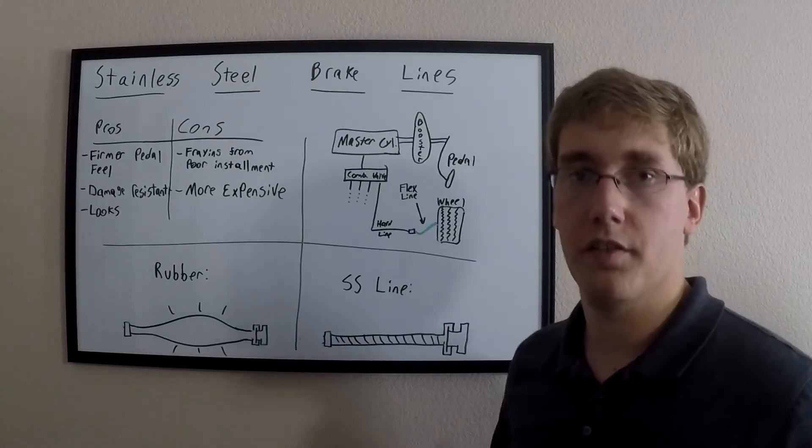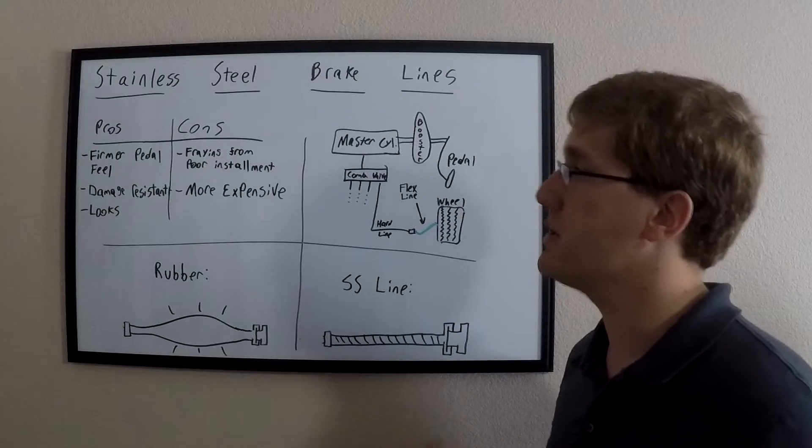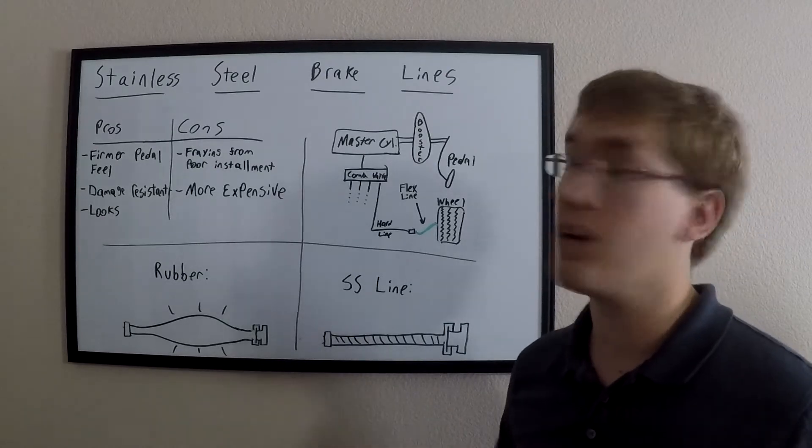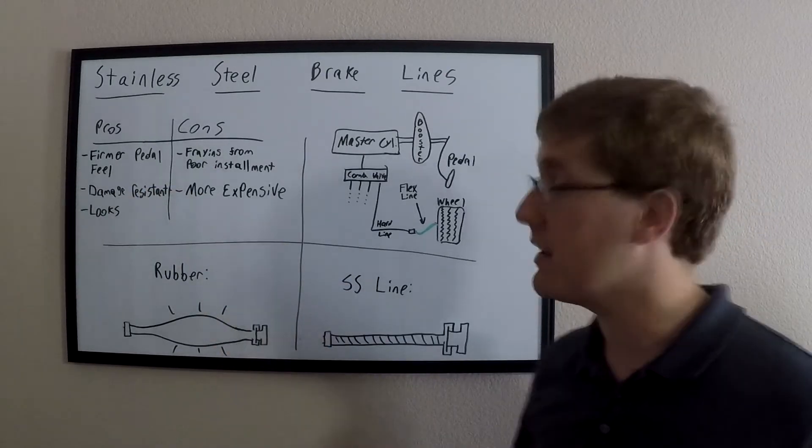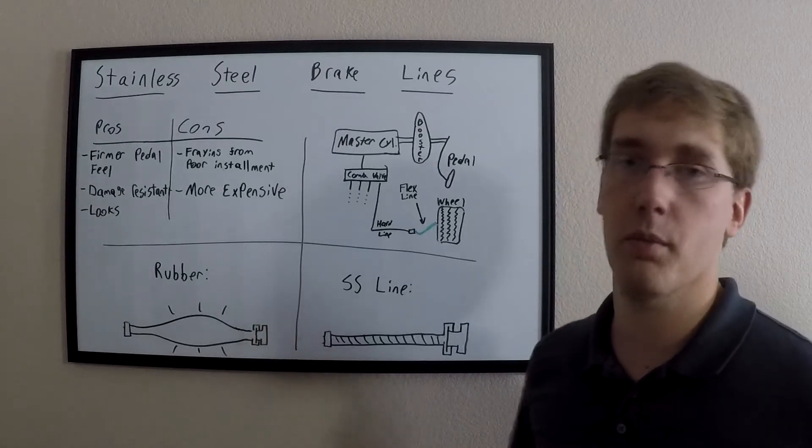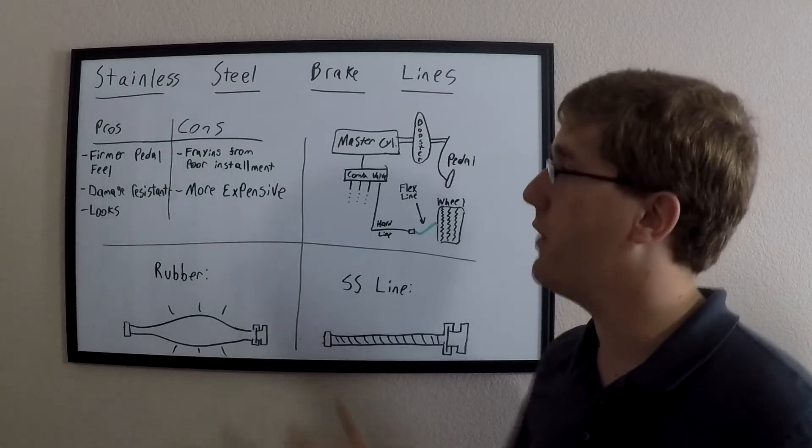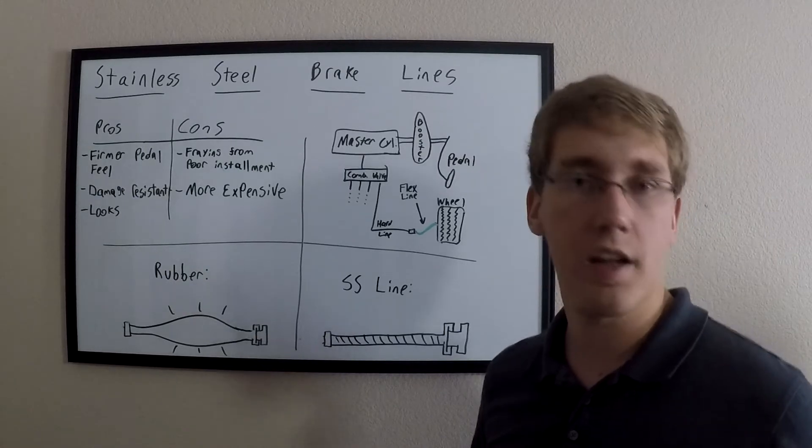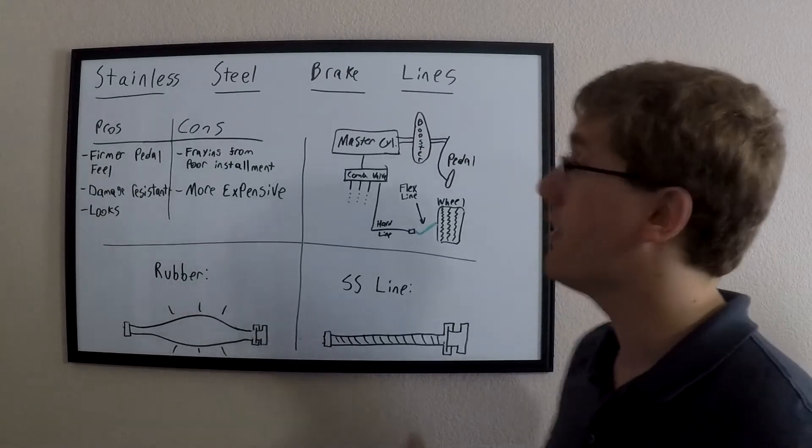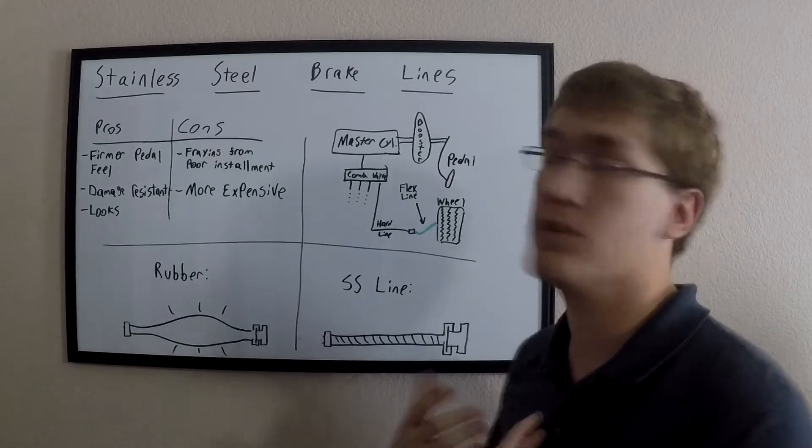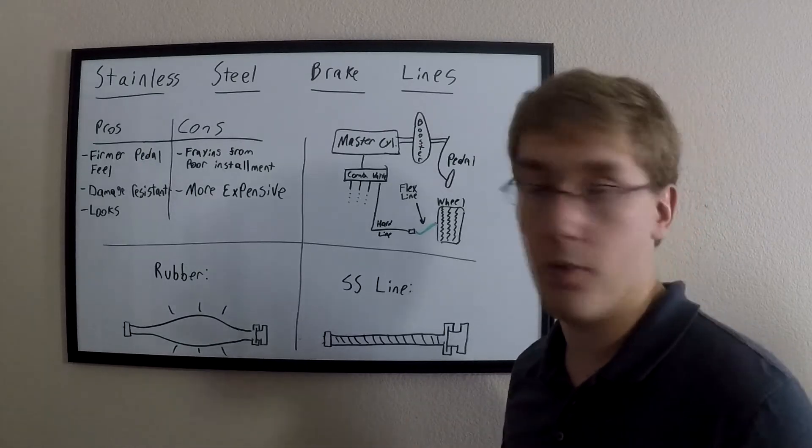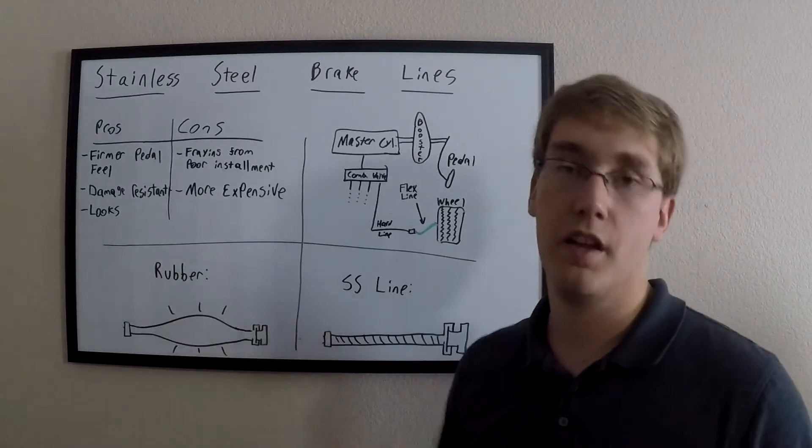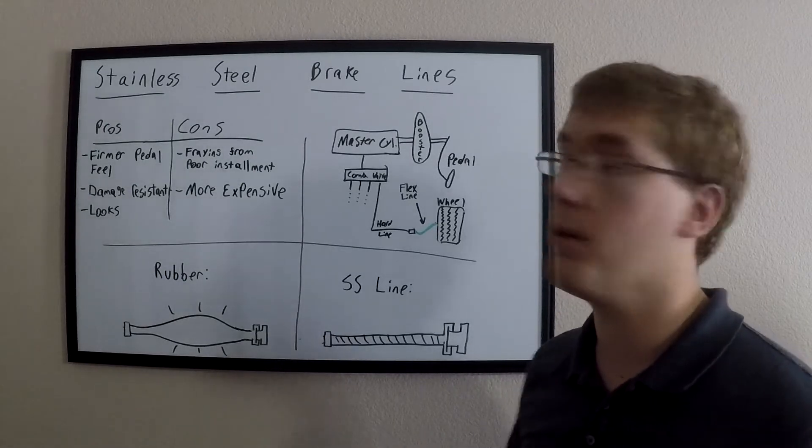So why would you buy stainless steel brake lines? Well, for the reason just mentioned, stainless steel brake lines can sometimes give you a firmer pedal feel by eliminating the expansion inside the brake line. They are also in some ways more resistant to damage from tearing if a sharp rock gets kicked up and hits your brake line. They're a little less resistant to being torn open than your OEM rubber hoses. And some people like the looks of the stainless steel lines much better than the rubber hoses.